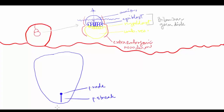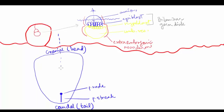Now that the primitive streak has been established, we know that this side is the caudal end, or the tail end of the embryo, and this side is the cranial, or the head end of the embryo. We also know where the median plane of the embryo lies — it goes right through the primitive streak. We also know that this is the dorsal, or the posterior surface of the embryo.